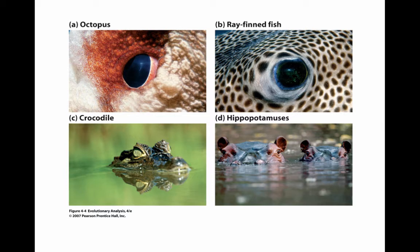A good example of determining whether a trait is due to homology or homoplasy is looking at the evolution of the eye. In this figure, we see four animals: an octopus, a ray-finned fish, a crocodile, and a hippopotamus. The octopus and ray-finned fish have camera eyes. The crocodile and hippopotamus also have eyes, but they sit on top of the skull and are quite different. We say that these two types of eyes arose due to convergent evolution.